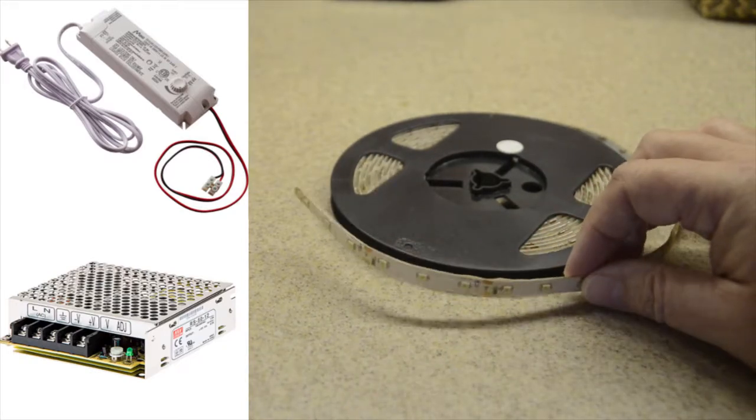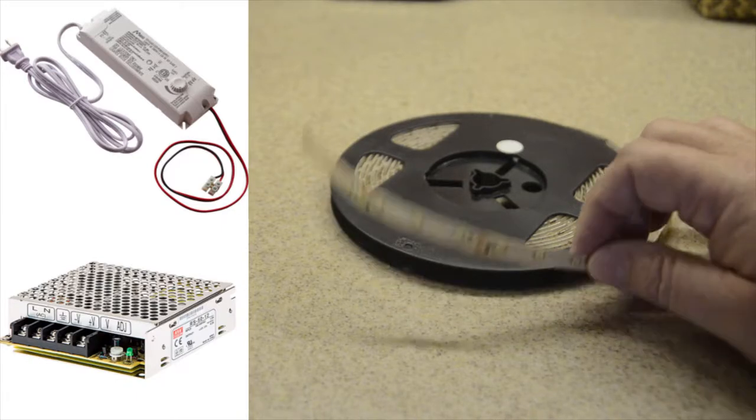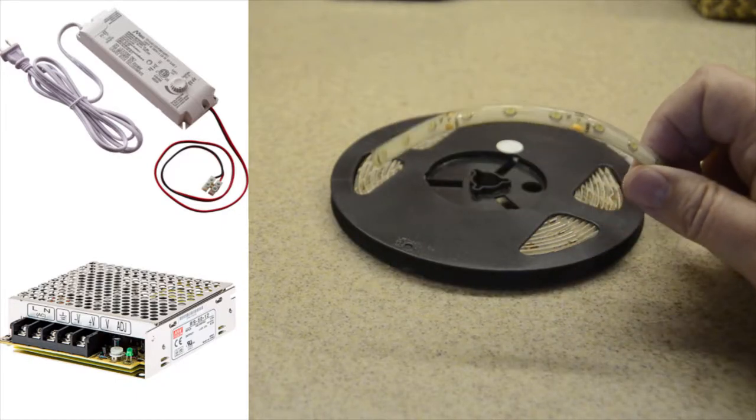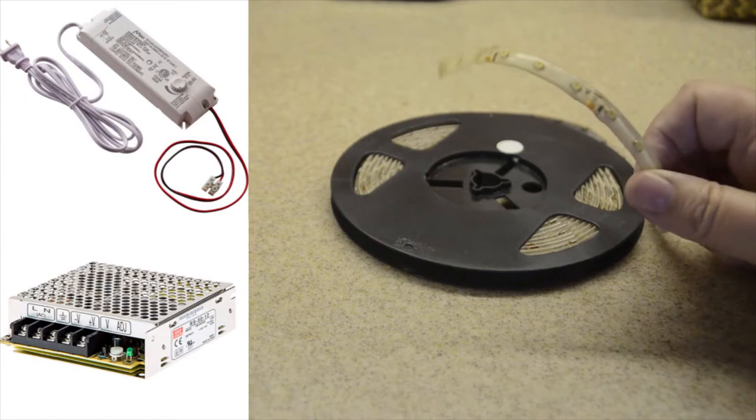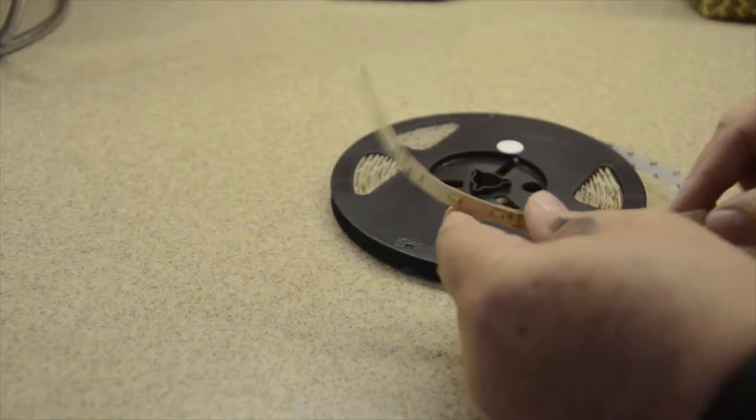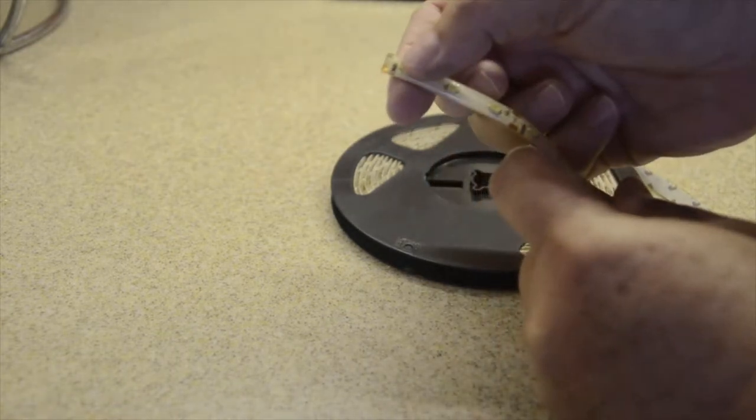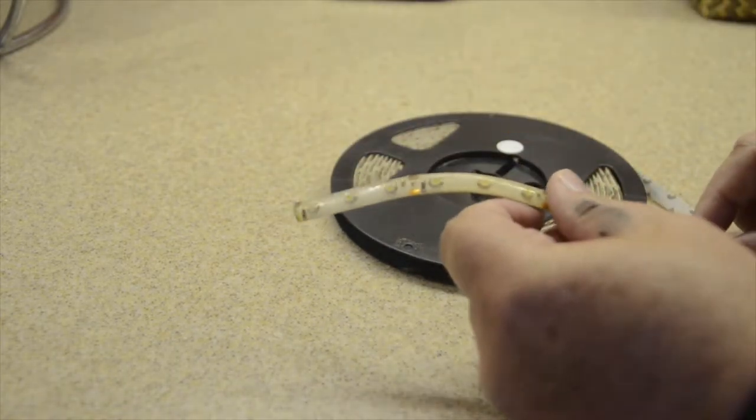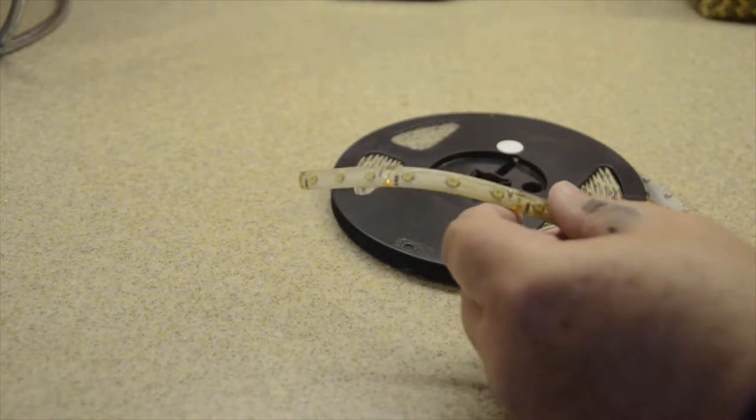I'll have some links in my descriptions below of the type that I used, but this is really nice because you basically cut it to the length of your cabinets and just solder in your wires. I'll show you how I've got it mounted up under the cabinet here.